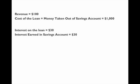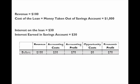That same thirty dollars is what he would earn in interest if he kept the money in the savings account. So the interest earned on a thousand-dollar savings account is thirty dollars. We now have enough information to calculate revenue, accounting profits, and economic profits — both before and after he takes the money out of the savings account.